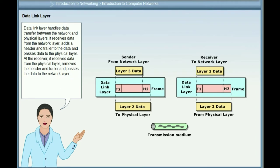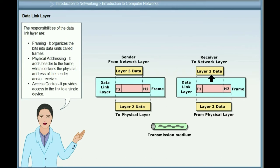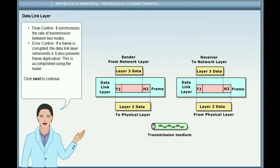The Data link layer handles data transfer between the network and physical layers. It receives data from the network layer, adds a header and trailer, and passes data to the physical layer. At the receiver, it receives data from the physical layer, removes the header and trailer, and passes data to the network layer. Responsibilities include: Framing — organizes bits into data units called frames; Physical addressing — adds a header with the physical address of sender and/or receiver; Access control — provides link access to a single device; Flow control — synchronizes transmission rate between two nodes; Error control — retransmits corrupted frames and prevents frame duplication using the trailer.